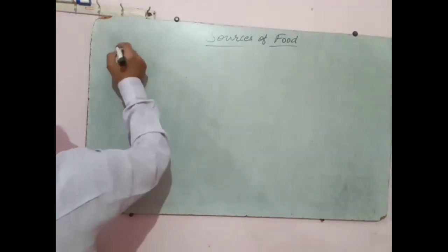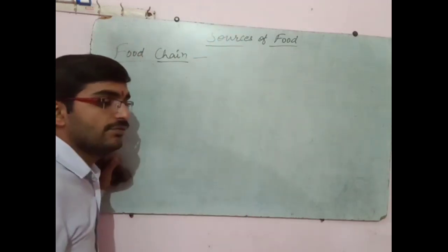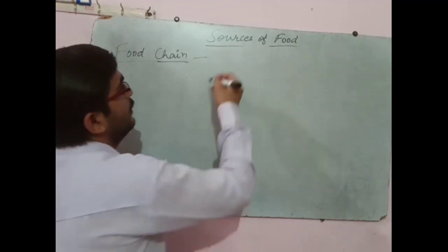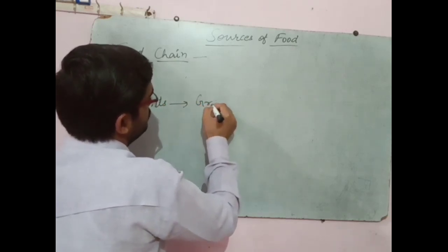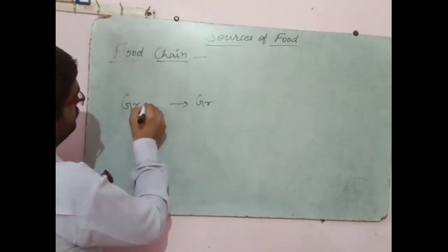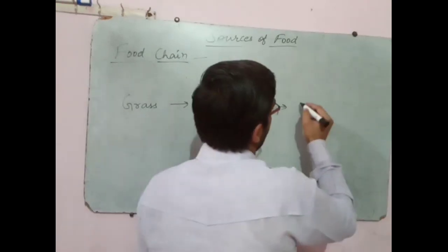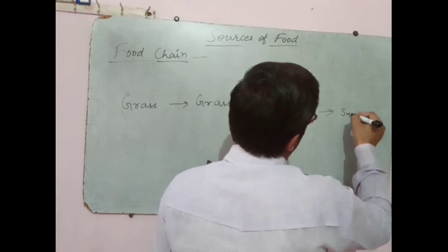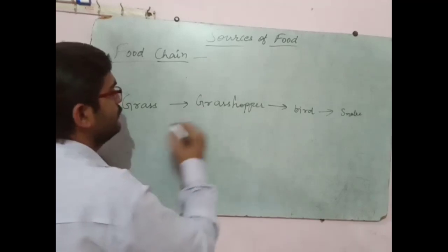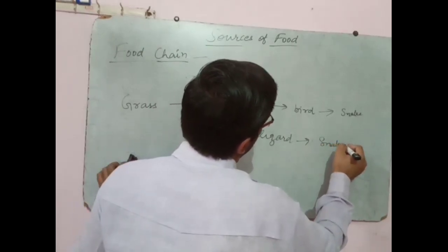One more topic is there that we are going to discuss: food chain. What is a food chain? Food chain is the sequence of animals that eat one another. For example: plants are eaten by grasshopper, grasshopper is eaten by bird, and bird is eaten by snake. Or, grasshopper is eaten by lizard, and lizard is eaten by snake.